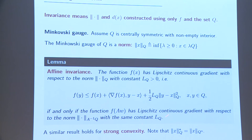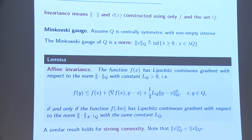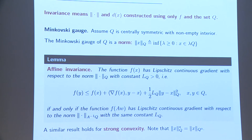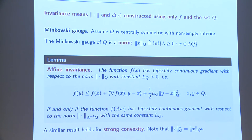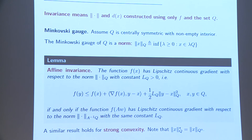What makes this a particularly good choice is that when you pick this Q-norm as the underlying norm defining your algorithm, the corresponding Lipschitz constant for the gradient will be invariant with respect to an affine change of coordinates. If you do an affine change of coordinates to your problem and pick the new Q-norm corresponding to the transformed feasible set, the gradient will have the same Lipschitz constant with respect to the transformed norm as with respect to the original one. Choosing the norm corresponding to the feasible set Q makes your Lipschitz constant and the strong convexity constant of the prox invariant.